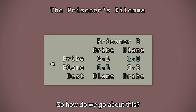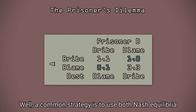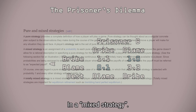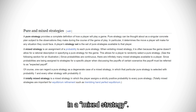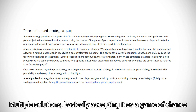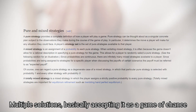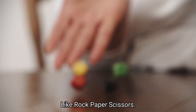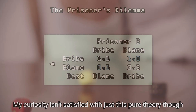So how do we go about this? Well, a common strategy is to use both Nash Equilibria in a mixed strategy. A mixed strategy uses probability to try to take advantage of multiple solutions, basically accepting it as a game of chance like Rock, Paper, Scissors.